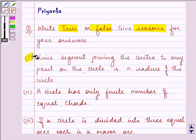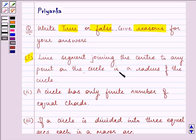The first statement says: line segment joining the center to any point on the circle is the radius of the circle. Now this is the center and let's say this is the point on the circle. The line joining the center to any point becomes the radius of the circle. Yes, this is a true statement.